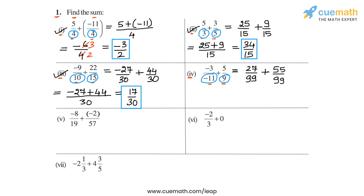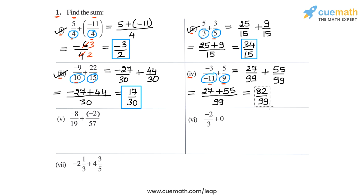If you want, you can pause the video and verify these calculations. Now we can write this as (27 + 55)/99. And 27 + 55 is 82, so we get 82/99. So in part 4, the sum is 82/99. That completes part 4.